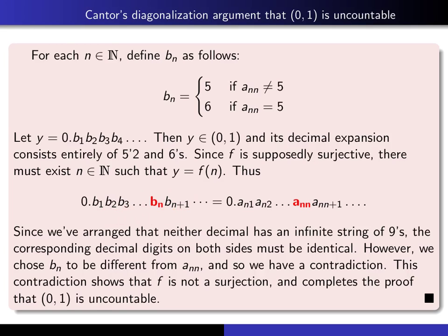And therefore, we have a contradiction. So this contradiction shows that it's impossible for f to be surjective. And that contradiction establishes that (0,1) is uncountable. That completes the proof.